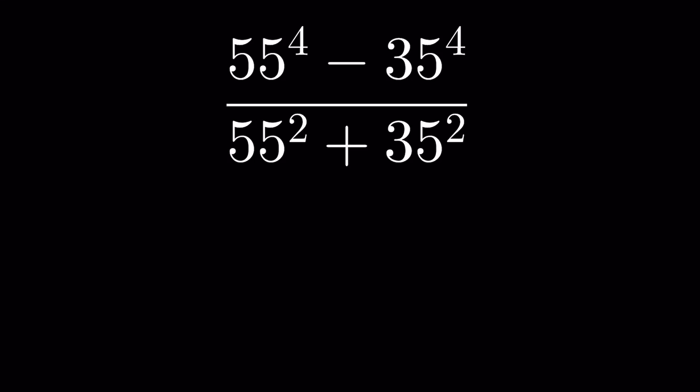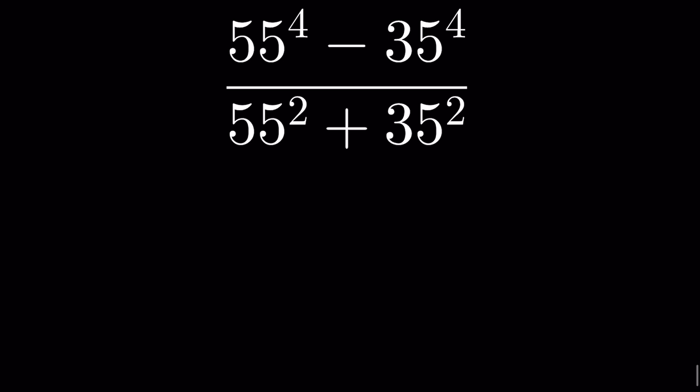55 raised to the power of 4 minus 35 raised to the power of 4, upon 55 squared plus 35 squared — solve without using a calculator. So 55 raised to the power of 4, we can write it as 55 raised to the power of 2, whole raised to the power of 2.